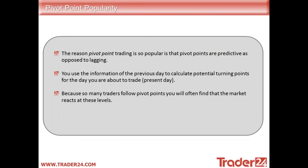The reason why these levels are so popular is that pivot points are predictive as opposed to lagging. What that means is many indicators are obviously based off historical data and it can be difficult sometimes to predict what is likely to happen going forward. The market is cyclical and it tends to follow a pattern, and patterns that were formed historically do tend to rear their head again every now and then. You use the information of the previous day to calculate potential turning points for the day you're about to trade.